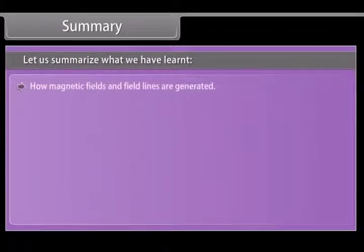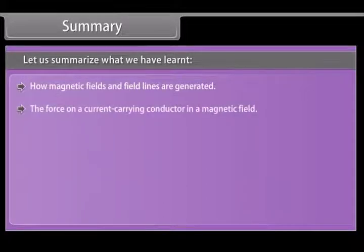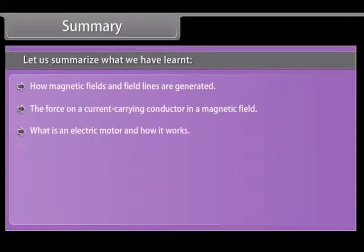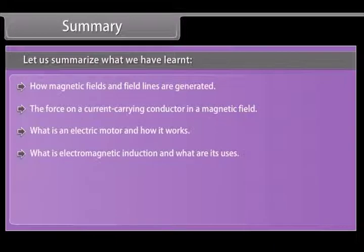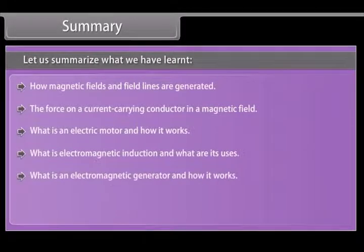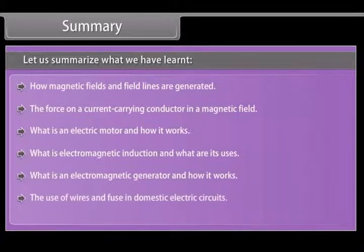Summary. Let us summarize what we have learned. How magnetic field and field lines are generated. The force on a current carrying conductor in a magnetic field. What is an electric motor and how it works. What is electromagnetic induction and what are its uses. What is an electromagnetic generator and how it works. The use of wires and fuse in domestic electric circuits.